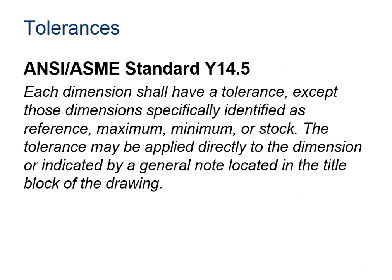Here's the definition from ANSI, or ASME, regarding which dimensions need tolerances. Each dimension shall have a tolerance except for dimensions that are specifically identified as a reference, a max or minimum, or as stock. A stock part means like a bolt or a nut that is manufactured in mass quantity that you're going to buy from a different manufacturer. The tolerance may be applied directly to the dimension, or indicated by a general note in the title block.